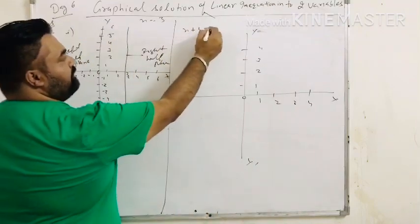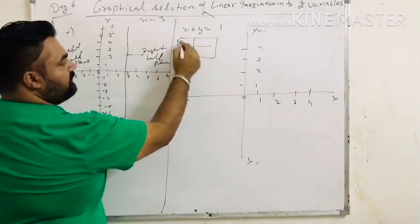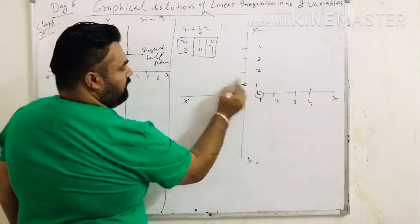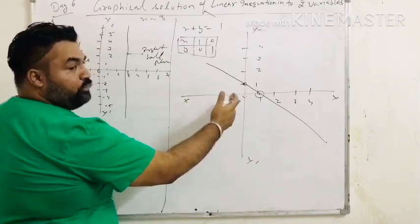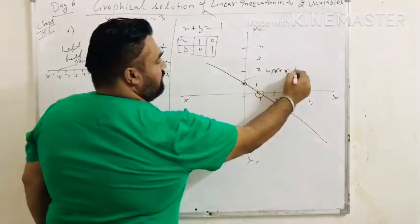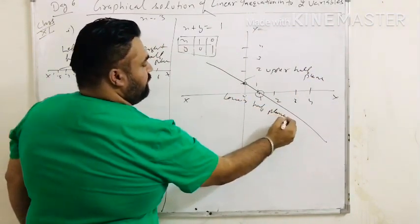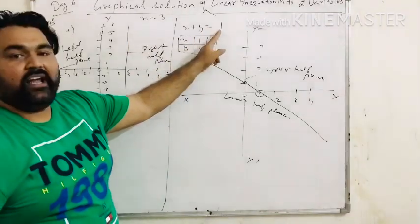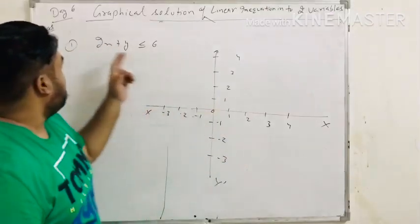If the equation is x plus y equals to 1, the solutions are 1,0 and 0,1. So draw the line through these two points. This line divides the xy plane into two halves: the upper half plane and the lower half plane. There are infinitely many solutions on this line, as we studied in class 10.